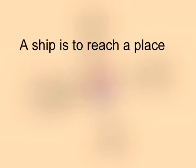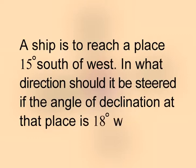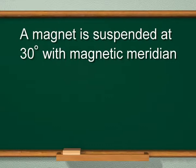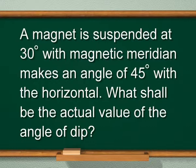Another problem: a ship is to reach a place 15 degrees south of west. In what direction should it be steered if the angle of declination at that place is 18 degrees west? Since the ship is to reach 15 degrees south of west, it should be steered west of magnetic north at an angle of 90 − 18 + 15 = 87 degrees.